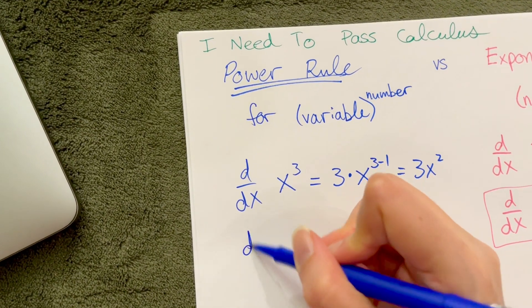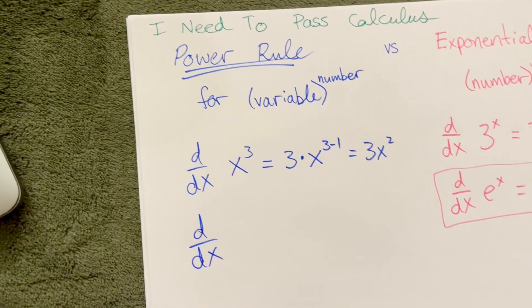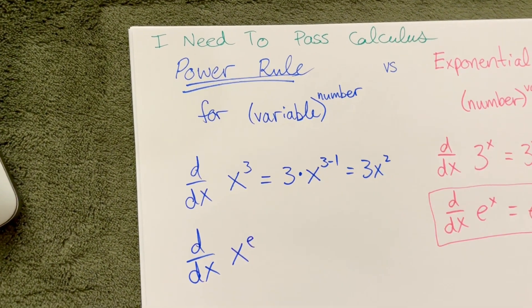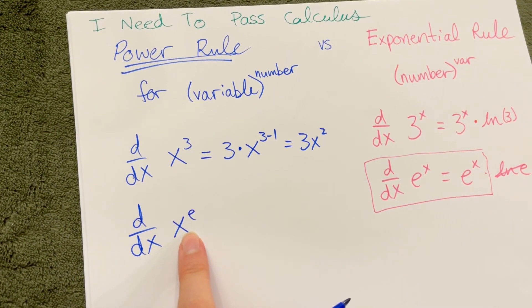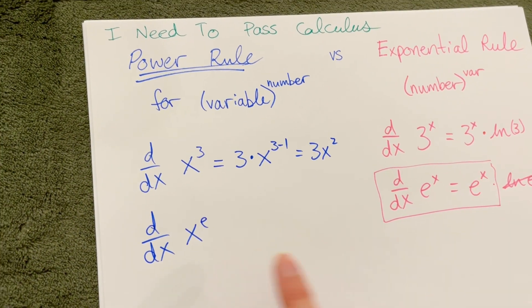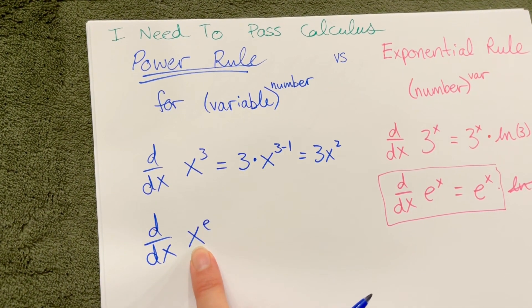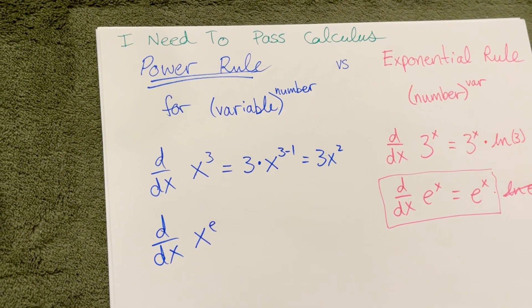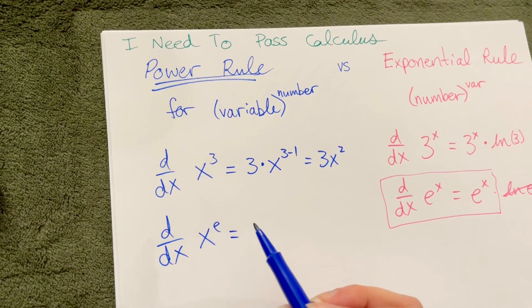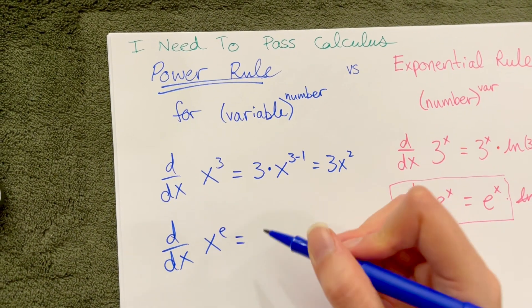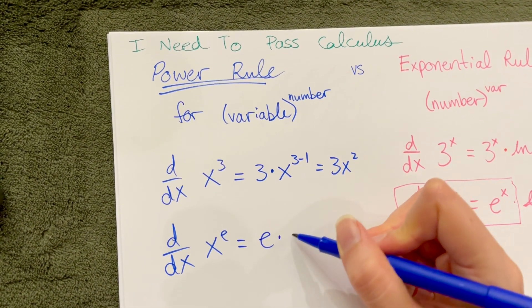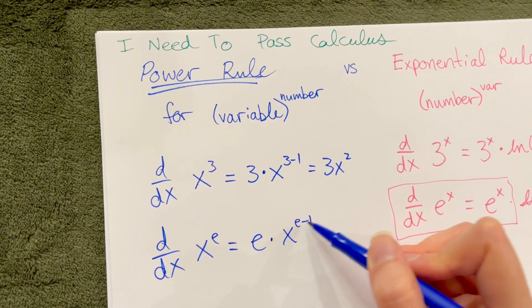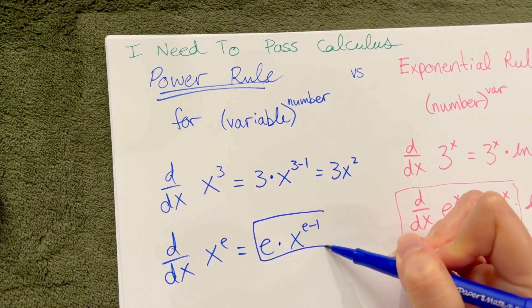Whereas if you had a trick question on an exam — x to the power e — it uses a totally different rule than e to the power x. You have to use the power rule because you have a variable as your base and e, which is a number, as your exponent. So you bring the exponent down out front: e times x to the e minus 1. That doesn't simplify very well, so that's a great final answer.